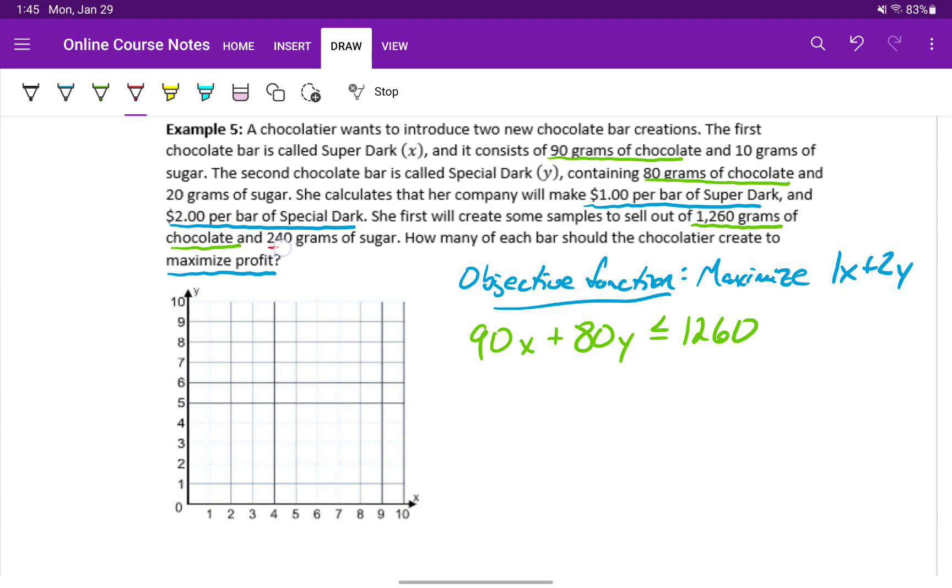We also know that she has 240 grams of sugar. The first bar requires 10 grams. The second bar requires 20 grams. So 10x plus 20y has to be less than or equal to the 240 grams of sugar that she has.